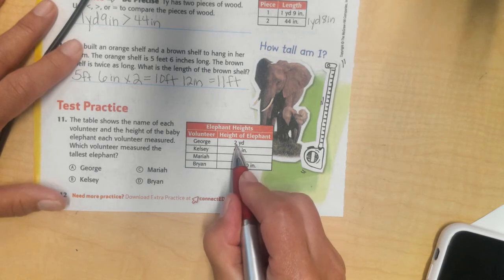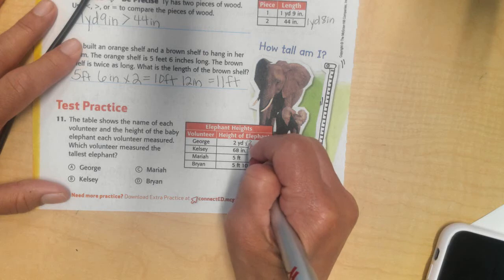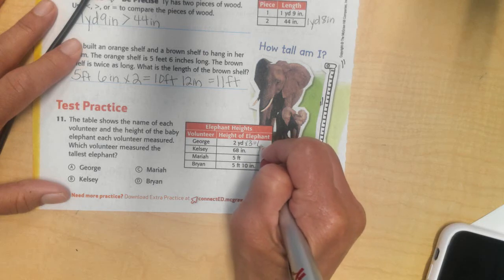I'll start with this one. This one seems easiest, right? 2 yards times 3 feet in each yard is going to give me 6 feet.